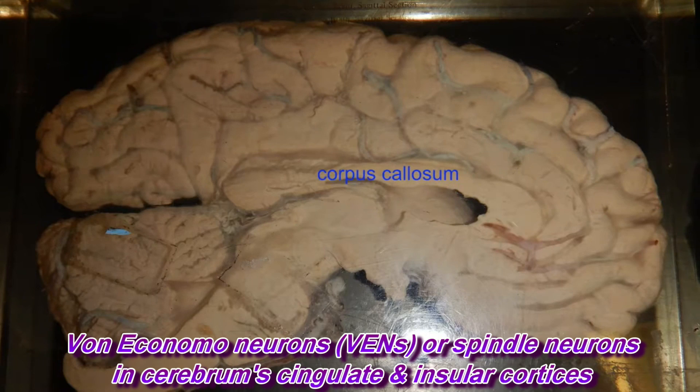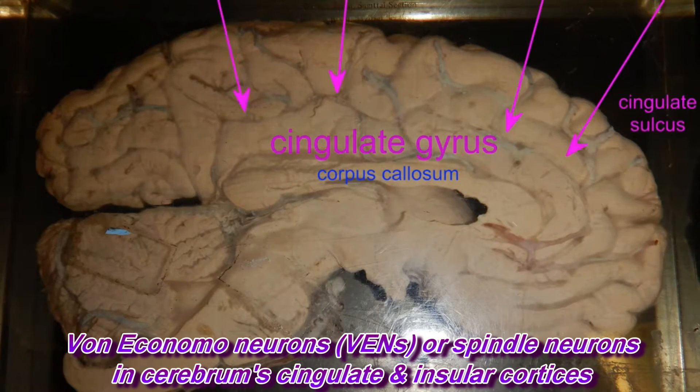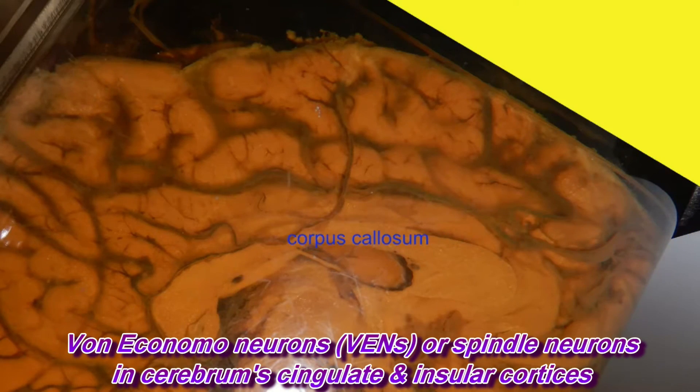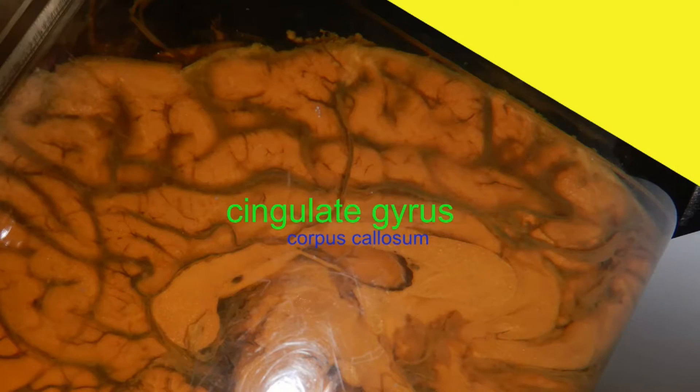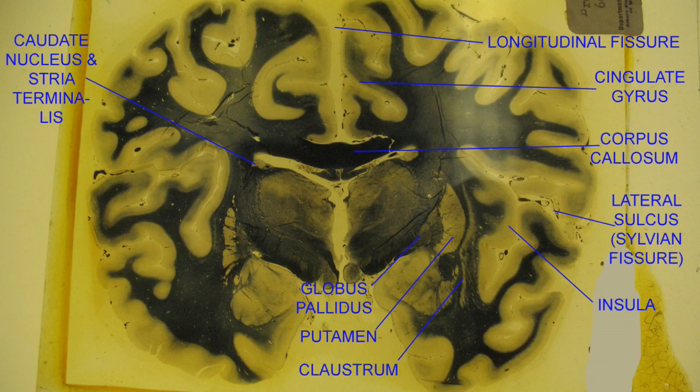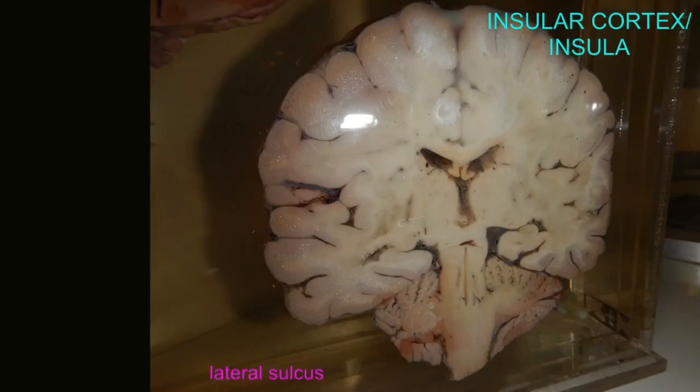And there are neurons known as von Economo neurons, or spindle neurons, which are located in the cerebral cortex and have been described as bipolar neurons. These are located in specific regions in the cingulate cortex and the insular cortex.